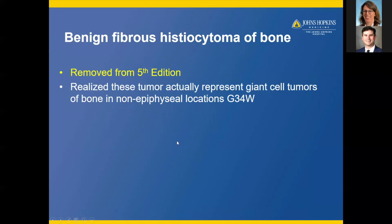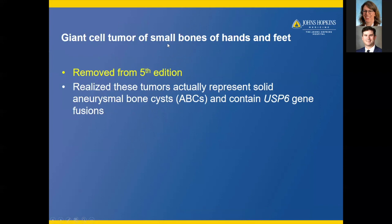Benign fibrous histiocytoma of bone has been removed from the fifth edition. We now realize these tumors actually represent giant cell tumor of bone in non-epiphyseal locations, based on the advent of G34W immunohistochemistry. Giant cell tumor of small bones of the hands and feet has also been removed from the fifth edition — we now realize these tumors actually represent solid aneurysmal bone cysts containing the USP6 gene rearrangement mentioned earlier.